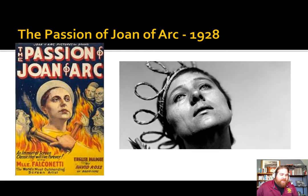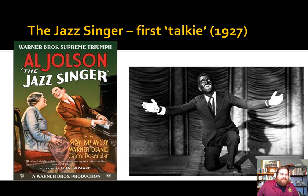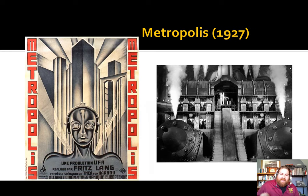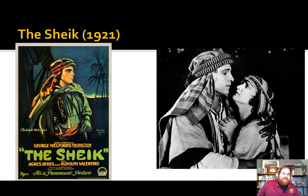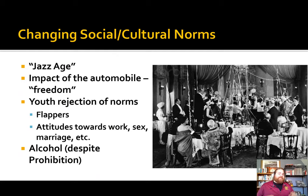Then film begins to take off. The Passion of Joan of Arc is the first historical drama. The Kid by Charlie Chaplin is considered one of the funniest movies of the silent film era. The Jazz Singer, complete with blackface, becomes the first picture with sound in 1927. Sci-fi is ushered in with Metropolis. We have romances like The Sheik in 1921 and horror movies like 1922's Nosferatu. All of this is changing cultural norms in an incredible way.